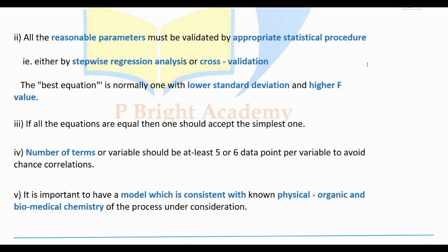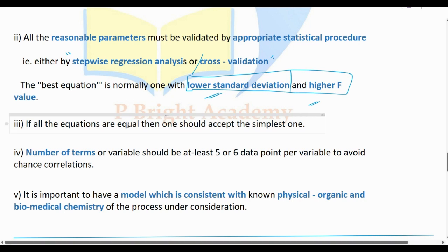The statistical validation is done using step-wise regression analysis and cross-validation. We determine the lowest standard deviation and the highest F value to finalize the parameters. If all equations are equal, one should accept the simplest one.